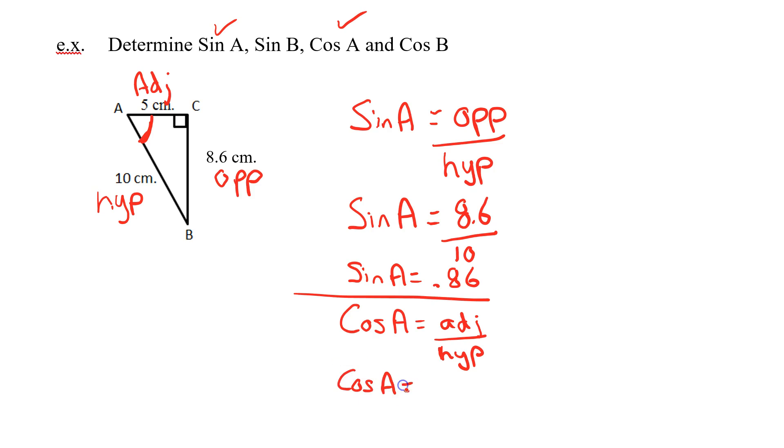Cos of A is, well, my adjacent, I've got labeled to be 5. Hypotenuse, I've got labeled to be 10. And of course I can work this out. The cos of A is going to be equal to 5 divided by 10, 0.5. So I've got my A's all worked out.